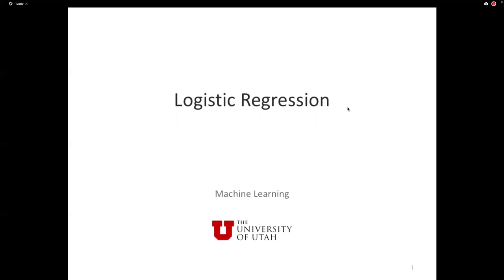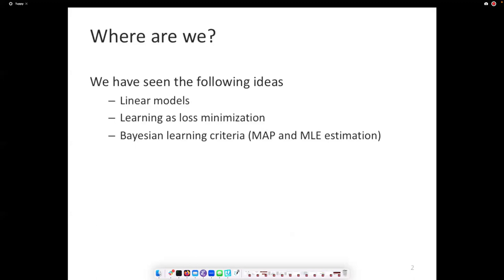We're going to look at a new hypothesis class and apply both maximum likelihood and maximum a posteriori criteria to see what kind of objectives we get. We've seen linear models, the idea of learning as loss minimization, and Bayesian estimation criteria. Logistic regression combines all three of these. You can introduce logistic regression as a Bayesian approach or purely as a loss minimization approach — and these two are going to be equivalent.